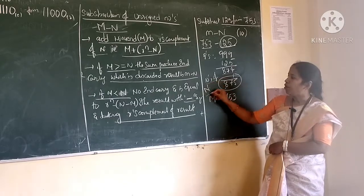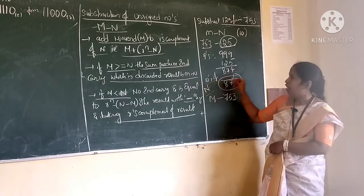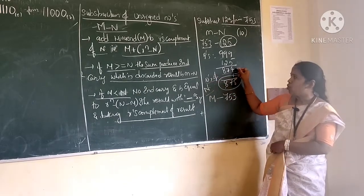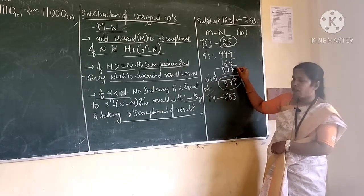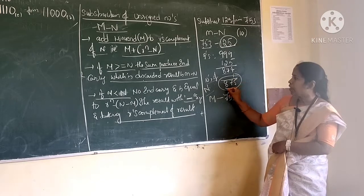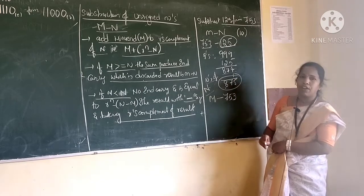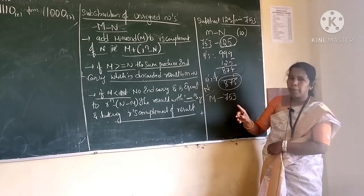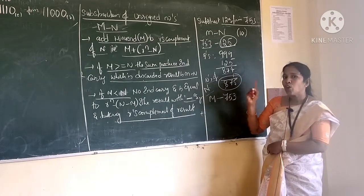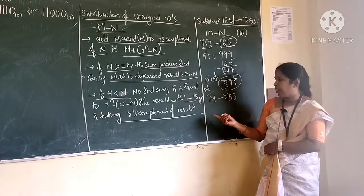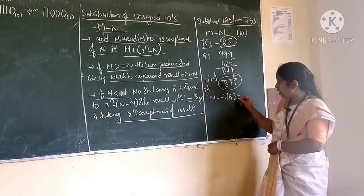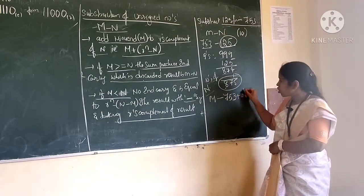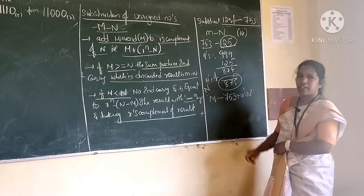Now, the 10's complement of n is obtained by adding 1 to the 9's complement of n — that is nothing but 875. So I should add m with r's complement of n, that is m plus 10's complement of n.